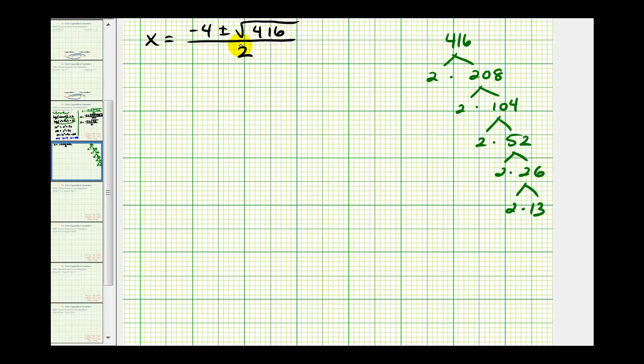The next step is to simplify the square root of 416. I've already made a prime factorization tree over here on the right to save some time. So we'll have x equals negative four, plus or minus the square root of 416, but the prime factorization of 416 has one, two, three, four, five factors of two, and a factor of 13.